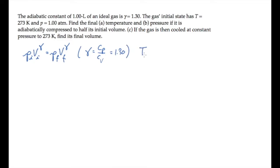Using the ideal gas law, we also know for an adiabatic process that TV to the gamma minus 1 is constant. We can use this relation to solve part A.